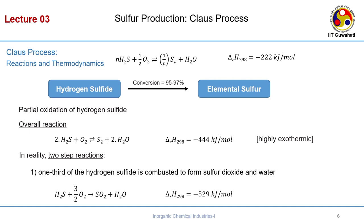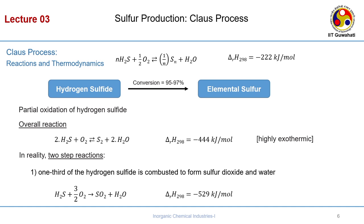What is the Claus process? Overall, hydrogen sulphide oxidizes to form elemental sulphur and water. But the issue is it is high enthalpy, so the temperature rises. Because of this thermodynamic limit, the conversion is hardly 50 to 60 percent, which is not good. We need a conversion close to 95 to 97 percent.